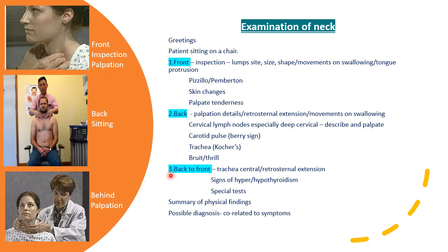Come back to the front to check the position of the trachea, and percuss for retrosternal extension of the goiter. Look for signs of hyper- and hypothyroidism and carry out the special tests for thyroid. Then come to a summary of the physical findings, arriving at a provisional and differential diagnosis, justified by the signs detected in the patient.